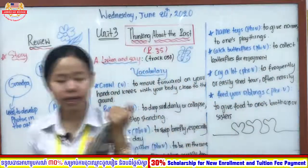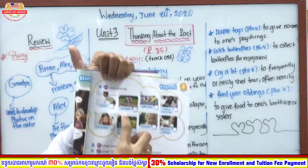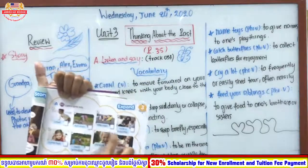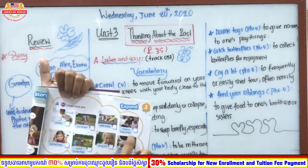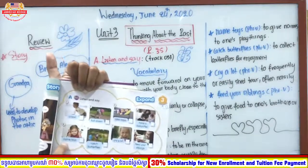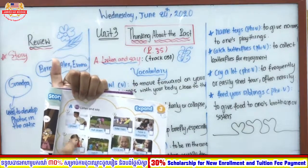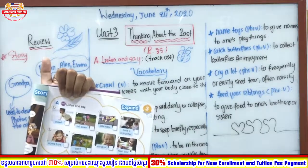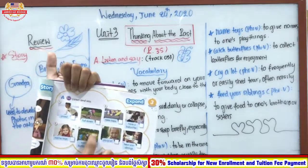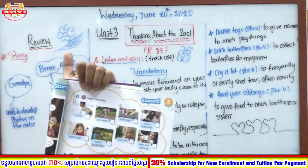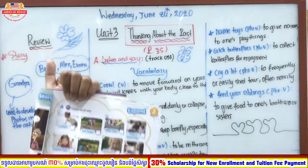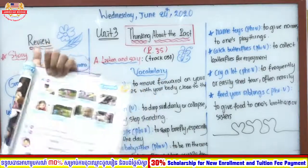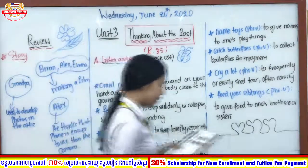Let's review all the words once more with the pictures. Number one: crawl. Number two: fall down. Number three: take naps — the boy is sleeping, taking short naps. Number four: have a babysitter. Number five: name toys — there are lots of toys she has named. Number six: catch butterflies — the boy and girl are trying to catch butterflies. Number seven: cry a lot. Number eight: feed your siblings.